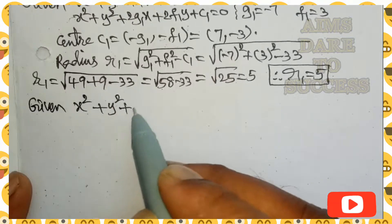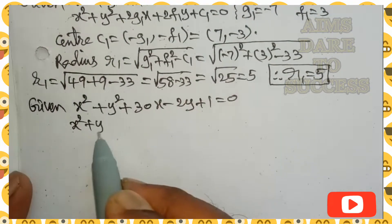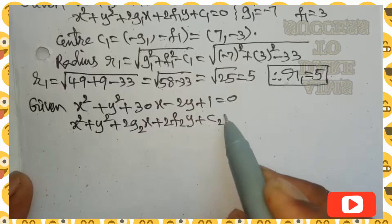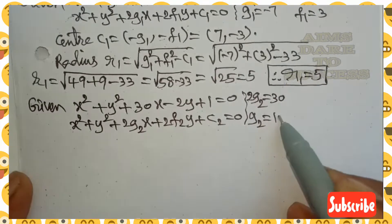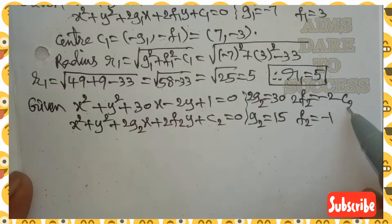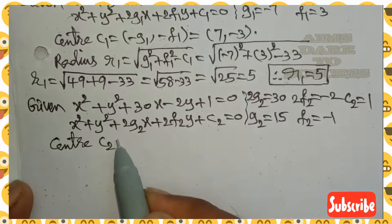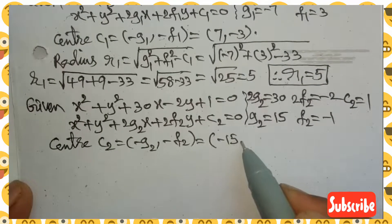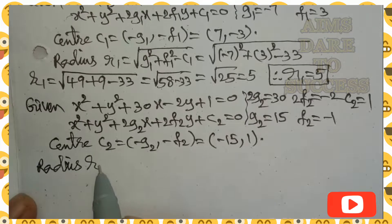Now for the second circle: x² + y² + 30x - 2y + 1 = 0. This is in the form x² + y² + 2g₂x + 2f₂y + c₂ = 0. Comparing coefficients: 2g₂ = 30, so g₂ = 15; 2f₂ = -2, so f₂ = -1; constant c₂ = 1. Center C₂ = (-g₂, -f₂) = (-15, 1).